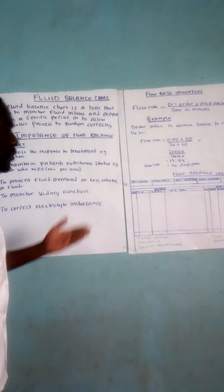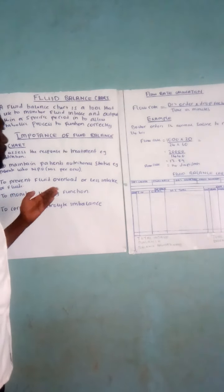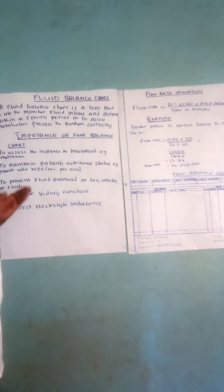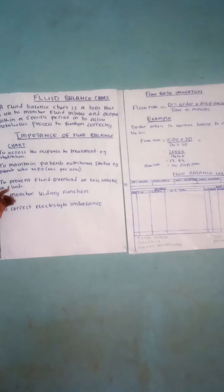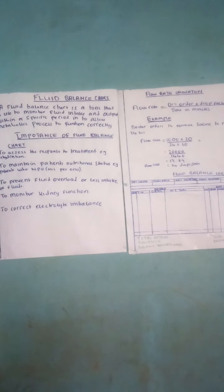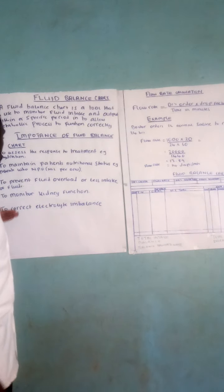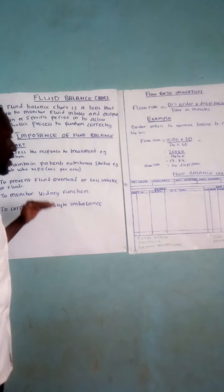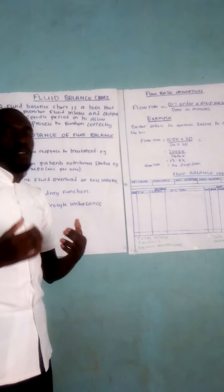The importance of a fluid balance chart are as follows: to assess the response to treatment, for example in dehydration; to monitor the patient's nutritional status, for example in patients who are nil by mouth; to prevent fluid overload or less intake of fluids; to monitor kidney function; to detect electrolyte imbalance; and many more.